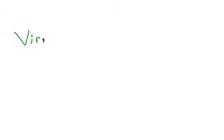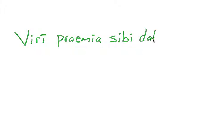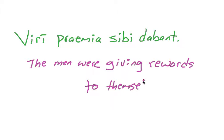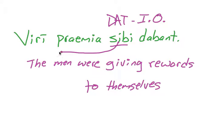Let's do a dative example. Viri prima sibi dabant — 'The men were giving rewards to themselves.' Here we used sibi as a dative of indirect object, but it's reflexive because it refers back to the subject. The men are doing something to themselves — they're giving rewards to themselves.